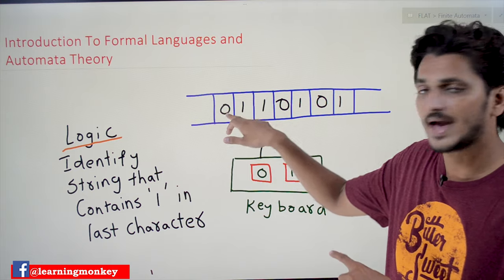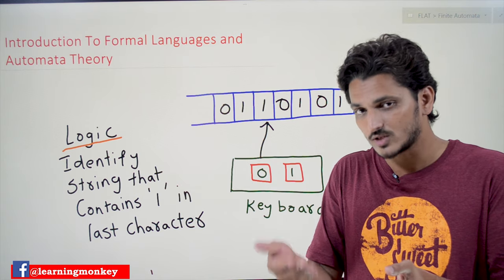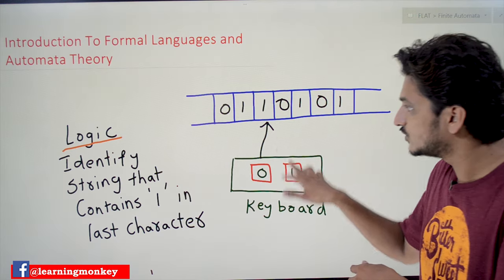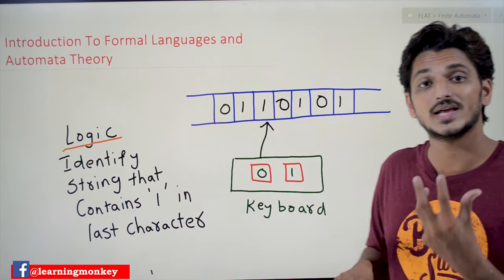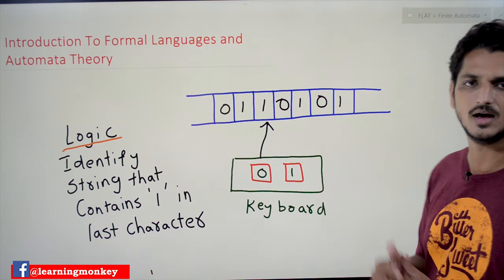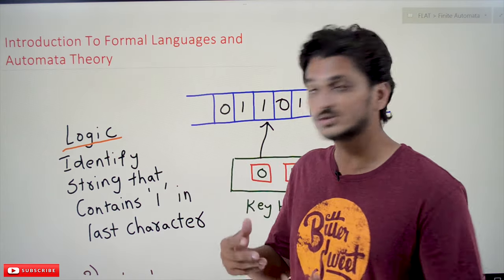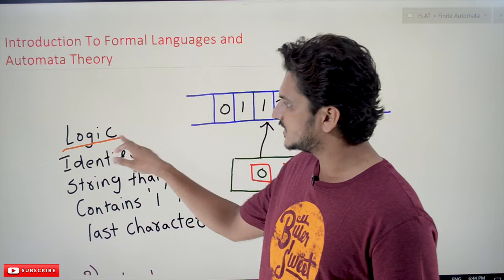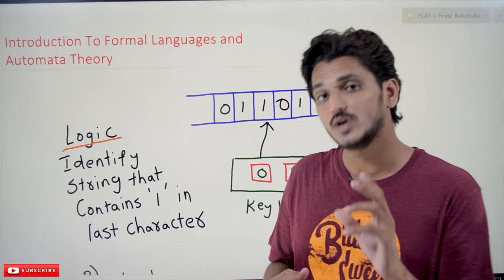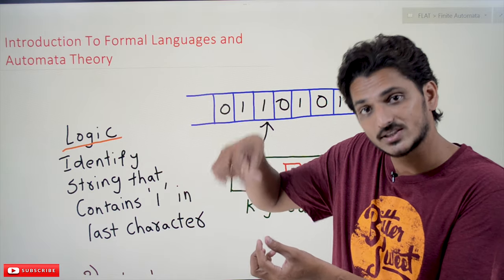Whenever we type keys on the keyboard, this input is saved in Random Access Memory. In our computational devices we have RAM, and the input is saved there like: 0 1 1 0 1 0 1. Now, if I want to write a logic — a program — the program has to identify strings that contain '1' as the last character.